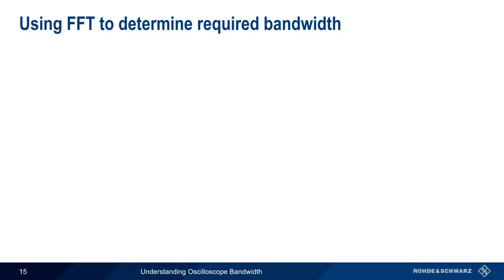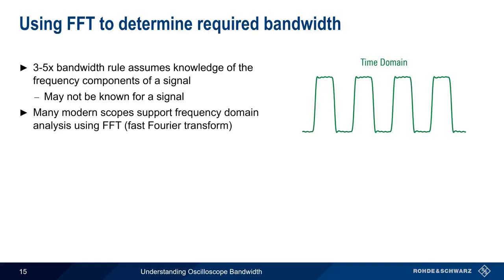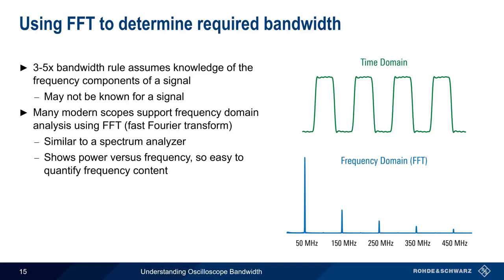One reason why rise time is useful is because it's a single number that incorporates the contribution of higher order harmonics. Although the 3 to 5 times bandwidth rule is much more straightforward, it does assume that we have knowledge of the frequency components of a signal. This is relatively easy to figure out for square or rectangular signals, but may not be as easy for more complex signals. Although scopes are fundamentally time domain instruments, many modern scopes support frequency domain analysis by performing an FFT, or fast Fourier transform, on the acquired waveforms. The result is similar to what's seen on a spectrum analyzer — that is, a plot of power versus frequency. This makes it very easy to quantify the frequency content and choose a bandwidth such that the important frequency components fall within the scope's bandwidth. This methodology can also be used to analyze the frequency domain content of lower speed and analog signals as well.